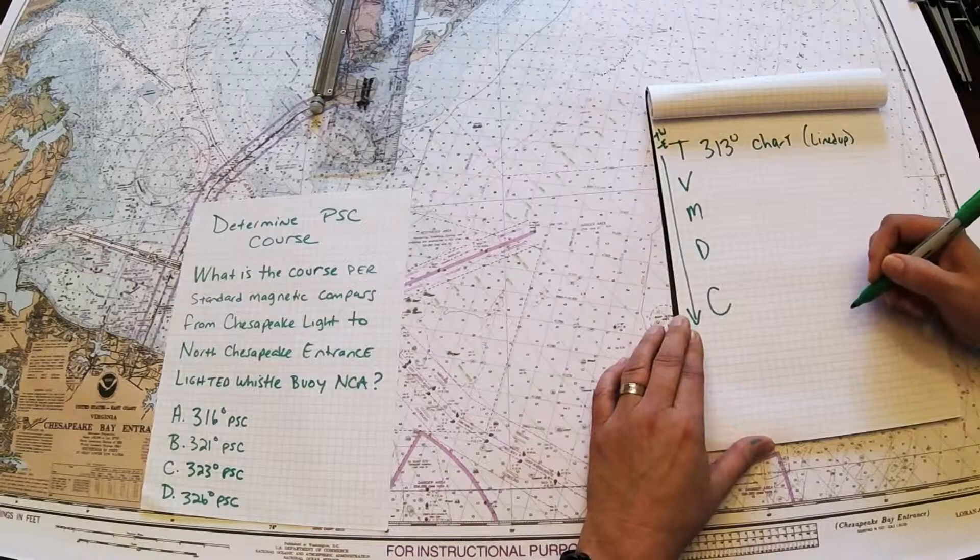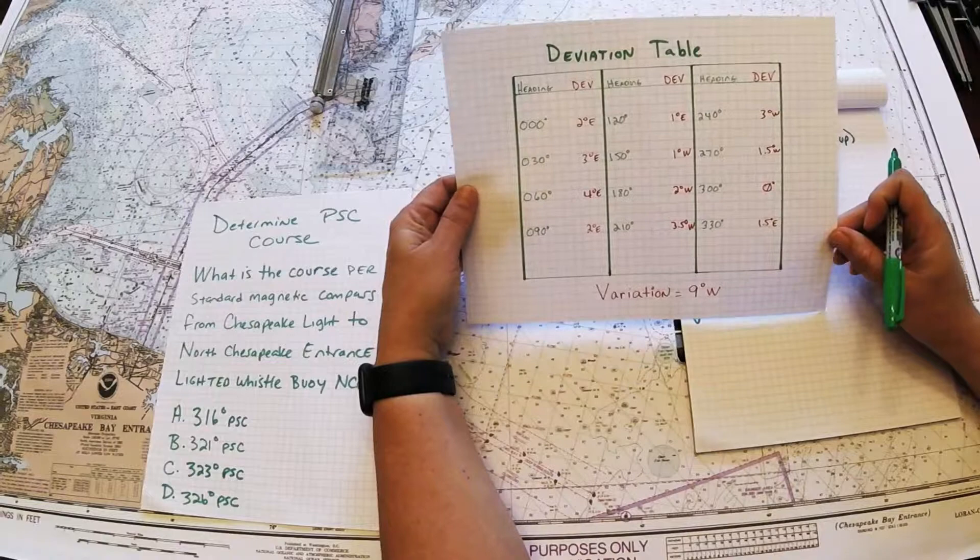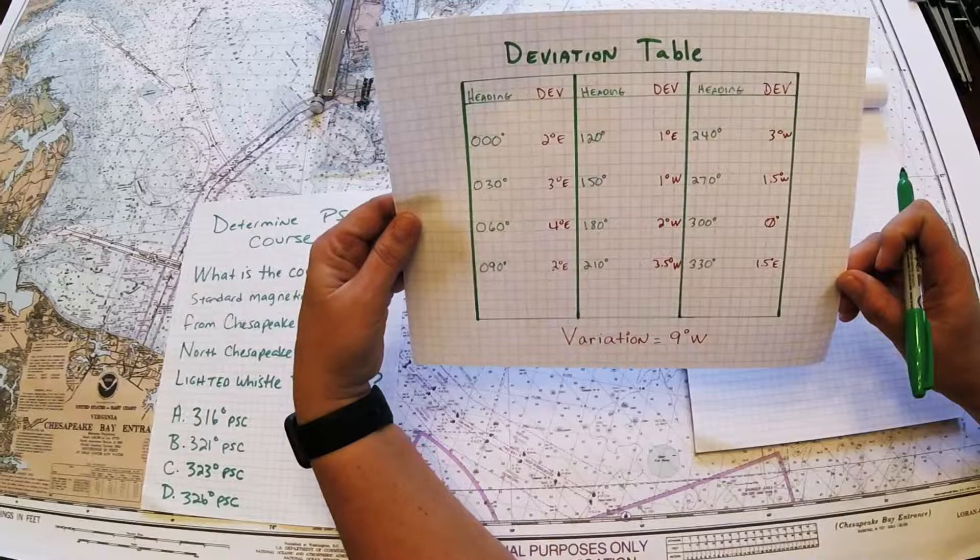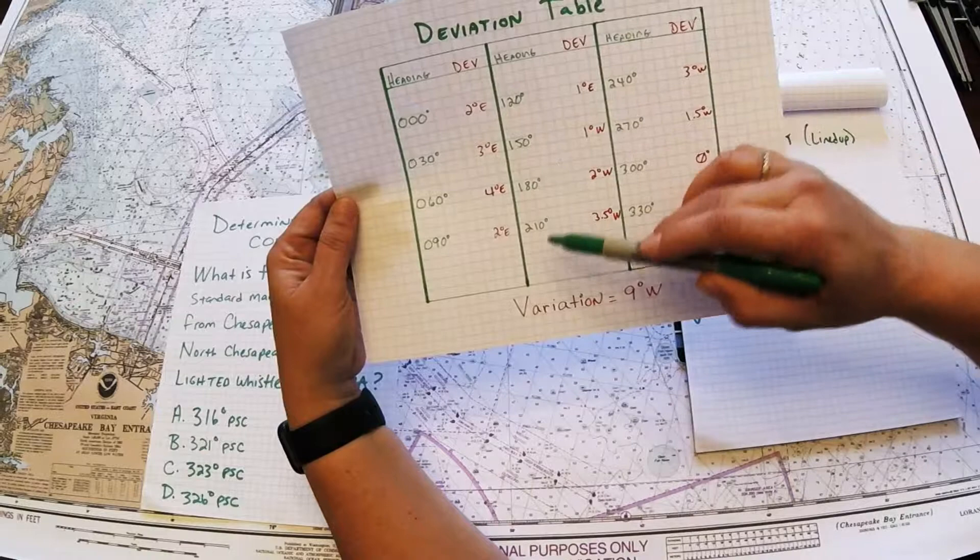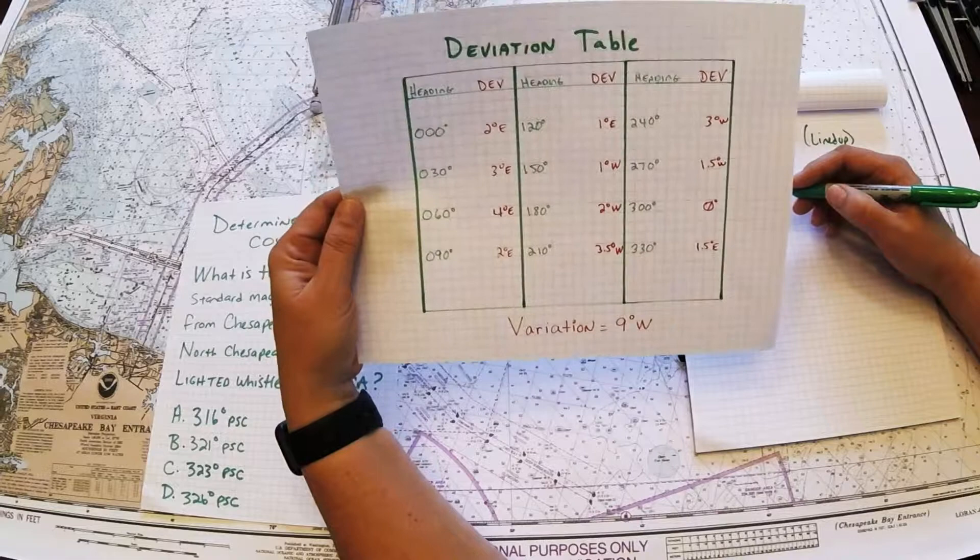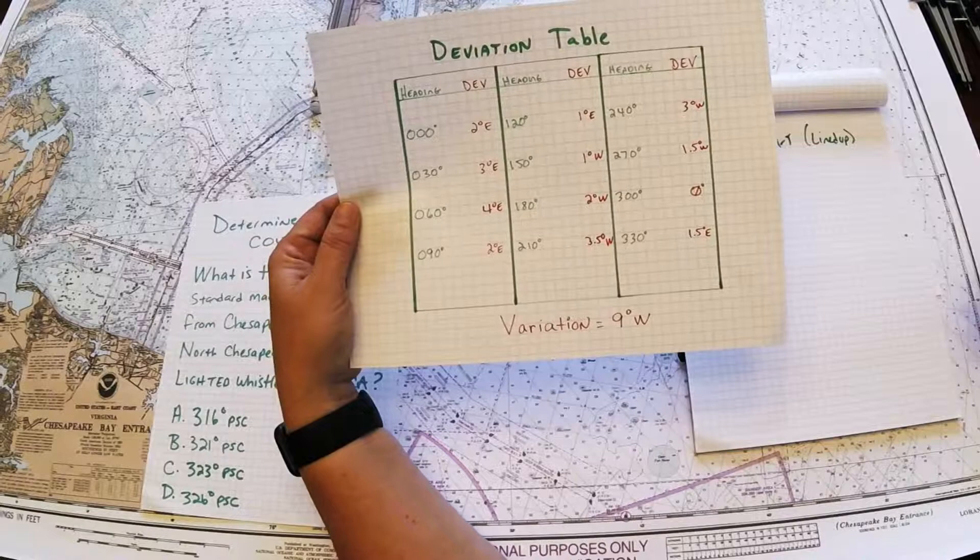Now in order to solve the rest, you're going to have to be given some sort of table, and in most of the problems that we do, we have some sort of table provided by the Coast Guard or by our student workbook. So we use the standard deviation table and I just rewrote it a little bit bigger. So we have the headings listed here with the corresponding deviation. It's every 30 degrees we give a deviation. And then we show you that for these charts, for the 12221 Chesapeake Bay problems, the variation for these extra problems is going to be 9 west.